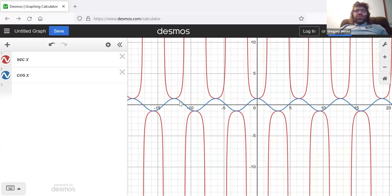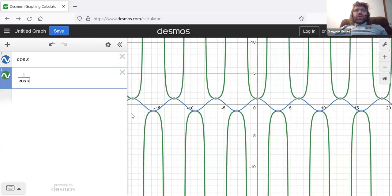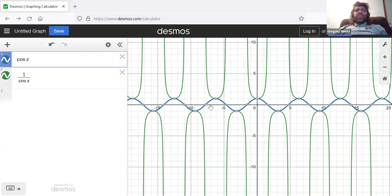So, the secant has vertical asymptotes. Again, because it's one divided by the cosine. So, every time the cosine is zero, the secant is not defined.